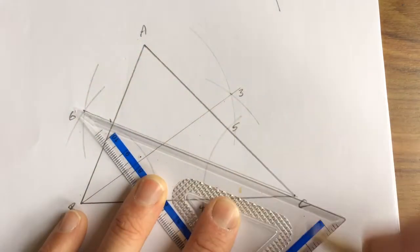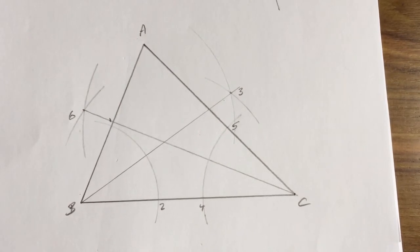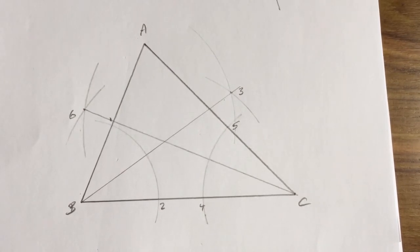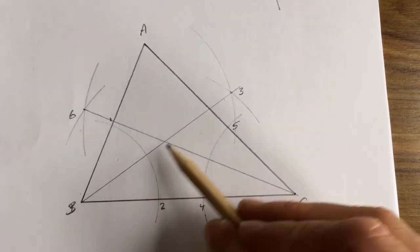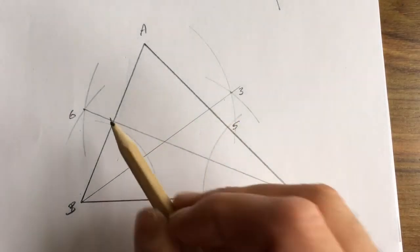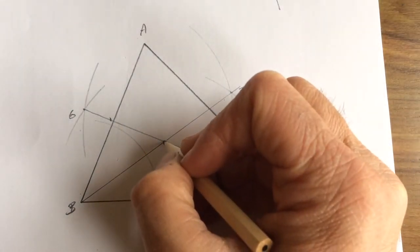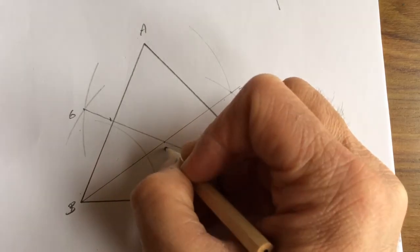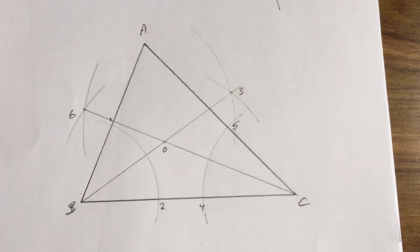And I have found my incenter. My incenter will be where this bisector cuts this bisector, and that is at this location here which I call O. That's how you find the incenter.